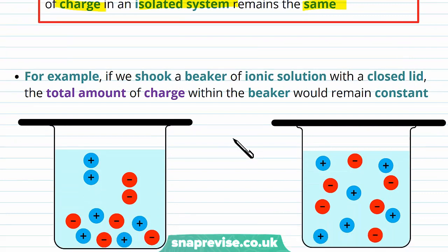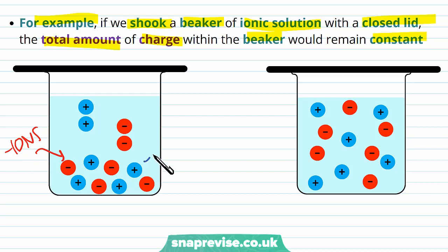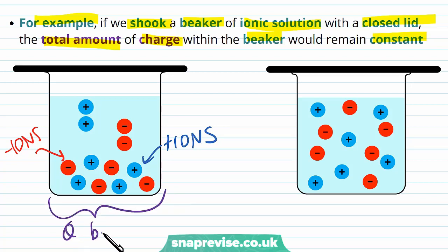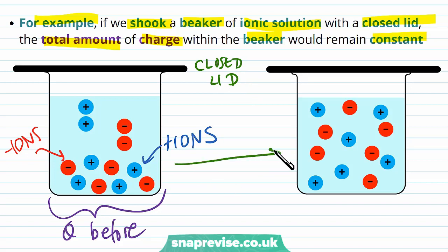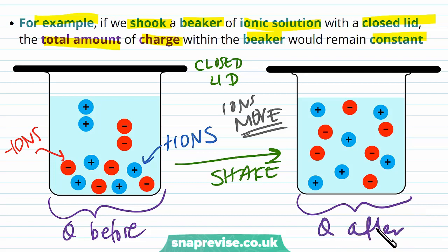For example, if we shook a beaker of ionic solution with a closed lid, the total amount of charge within the beaker would remain constant. In our ionic solution we have negative ions and positive ions. Before we shake it, the solution has a certain charge, and the closed lid means we have a closed system. When we shake it the ions move, but after shaking, because we have a closed system, the charge after shaking is equal to the charge before. This comes from the principle of charge conservation.